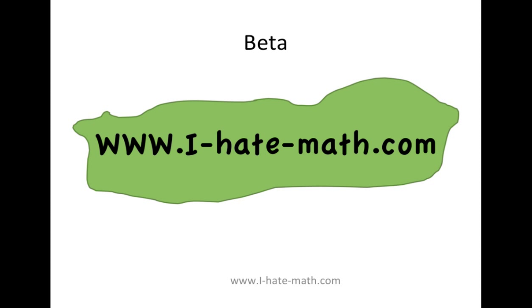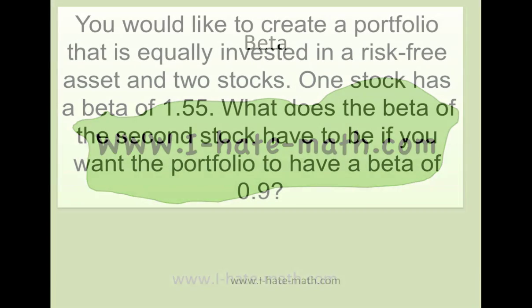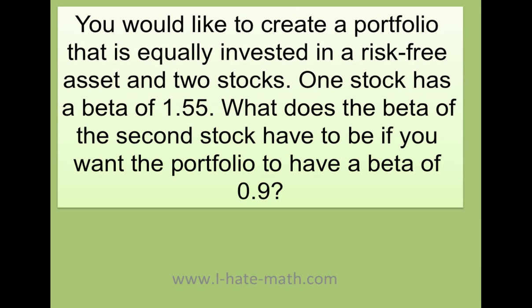Hi guys, in this video we're going to learn how to do problems related to beta. So let's say they ask you: you would like to create a portfolio that is equally invested in a risk-free asset and you have only two stocks. One stock has a beta of 1.55. What does the beta of the second stock have to be if you want the portfolio to have a beta of 0.9?